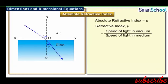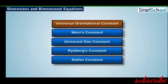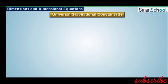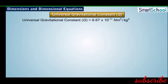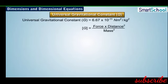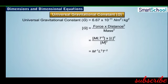We also have certain physical constants, each of which has a unit as well as a dimensional formula. For example, the universal gravitational constant G has a value of 6.67 × 10⁻¹¹ N m² kg⁻² and is expressed as G = F × d² / M². Thus, the dimensional formula of G is M⁻¹ L³ T⁻².